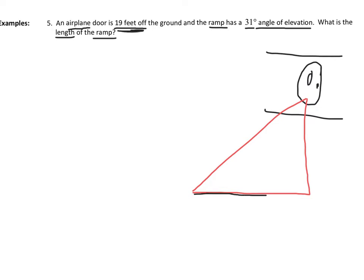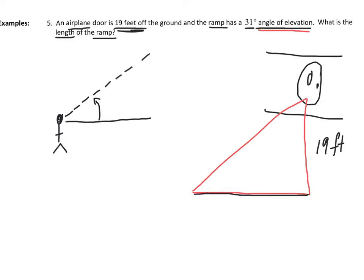So if the ground is at the bottom, straight up from there to the door is 19 feet. Next, I notice they're using the term angle of elevation — that's as if someone were looking straight ahead and then tilted their head up to look at something. So let's imagine this point in my triangle is looking up, and my angle of elevation going up to that airplane door is 31 degrees. Now I have to figure out what exactly I'm solving for — in this case, what they want is the length of the ramp, which is this side of my triangle. And I'm going to label the right angle since I've drawn out a right triangle.